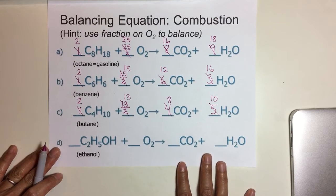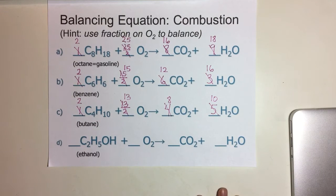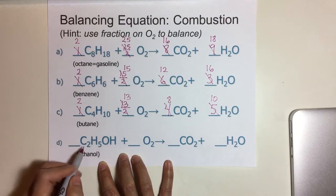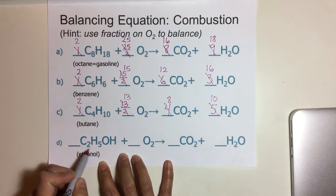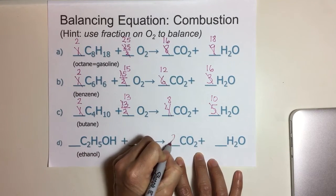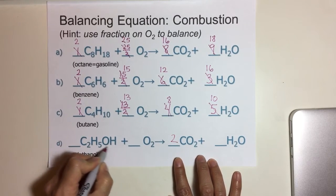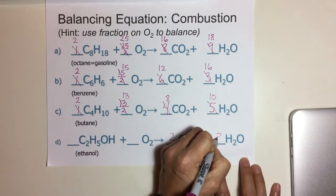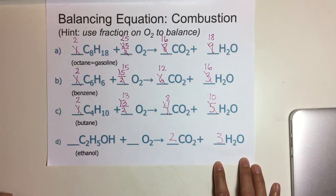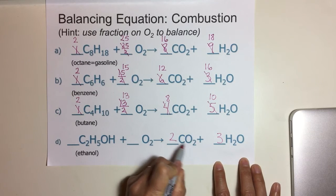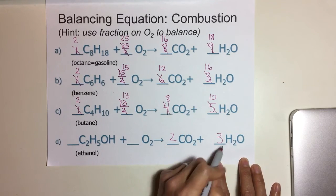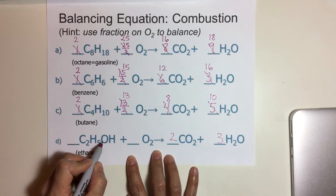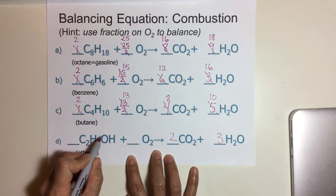Let's go to the bottom. Hopefully you paused it and tried balancing D out if you haven't done so. I'm going to get started right now. So carbon: there's 2 here and 1 here, so 2 coefficient. There's 6 hydrogens. Notice there's 5 here plus a 1 hydrogen right here, so there's 6, giving me a 3 coefficient in front of water.